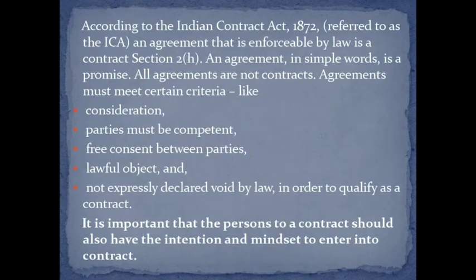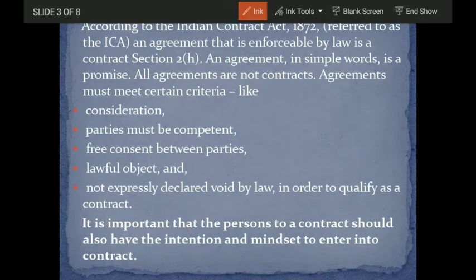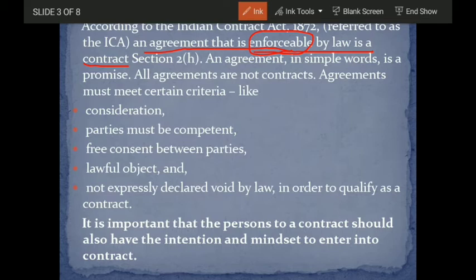According to the Indian Contract Act 1872, an agreement that is enforceable by law is a contract, as per Section 2(h). Section 2(h) of the ICA states that an agreement which is enforceable by law is a contract. The important word here is 'enforceable by law' — please mark this. Not all agreements are enforceable by law.